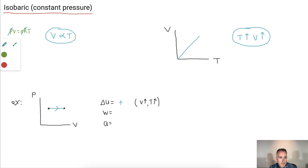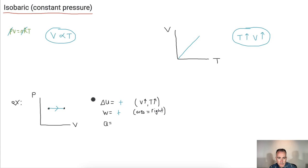How about the work done? We said that if the process goes to the right, it's positive. The work done is the area under this graph, and it goes to the right — so the work done is a positive value.